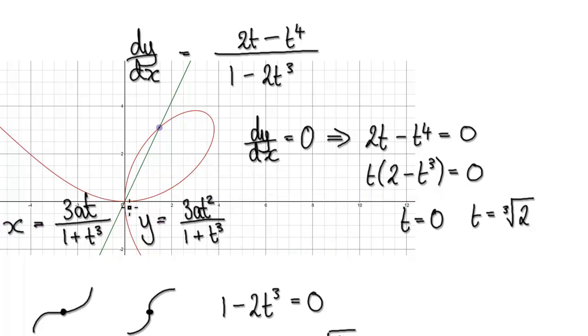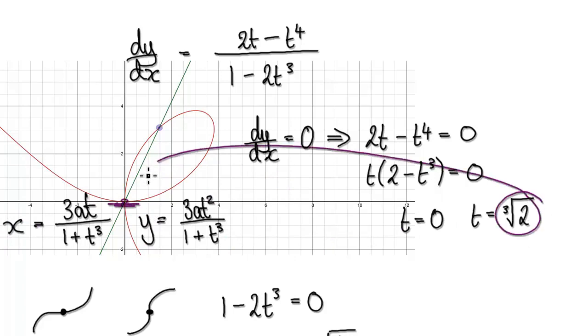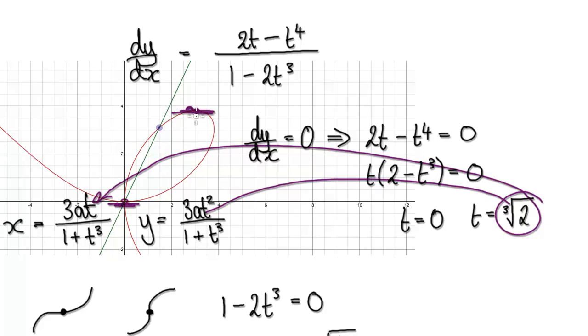It should be this point, and if you put the other value of t into the parametric equations for x and for y, the coordinates should be somewhere around this location on the curve.